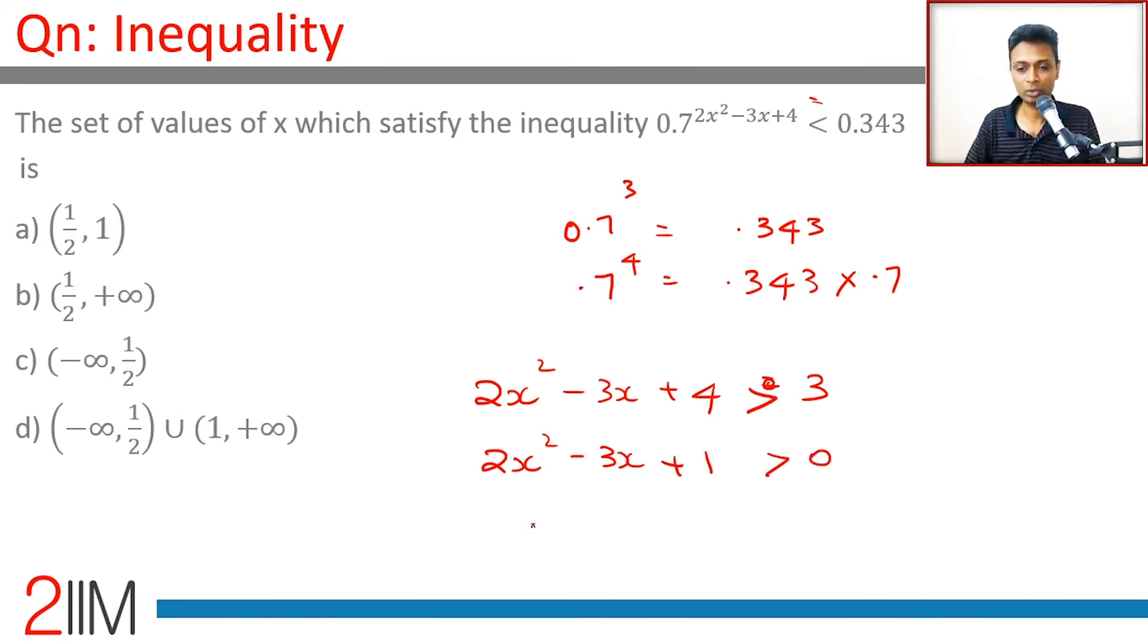This simplifies to 2x² - 3x + 1 > 0. We can factorize this: 2x² - 2x - x + 1 > 0, which gives us 2x(x - 1) - 1(x - 1) > 0.